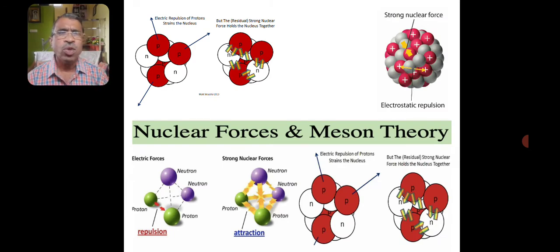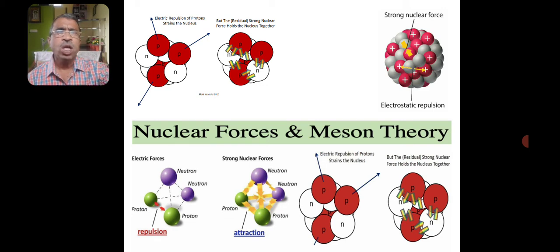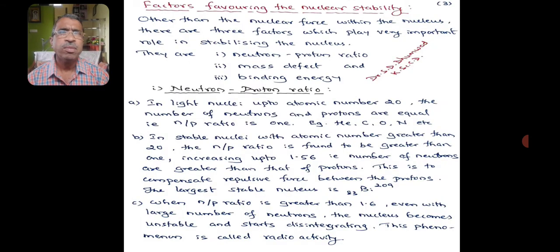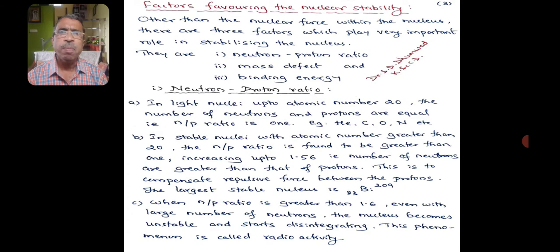In a large nucleus, nucleons are spread over space so that the nuclear force operating on them is quite weak, and the electrostatic force of repulsion also becomes weak. Hence these nuclei are unstable. Now let us study the factors that favour nuclear stability. Other than the nuclear force within the nucleus, there are three factors which play a very important role in stabilizing the nucleus: neutron-proton ratio, mass defect, and binding energy.